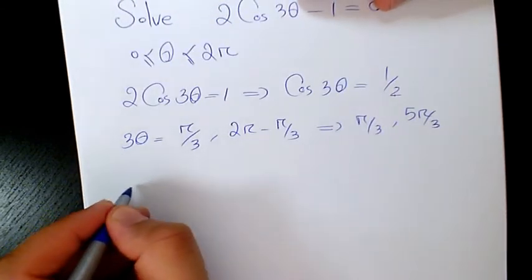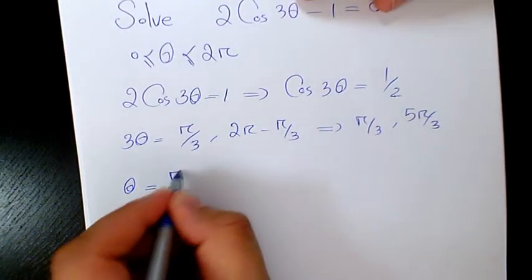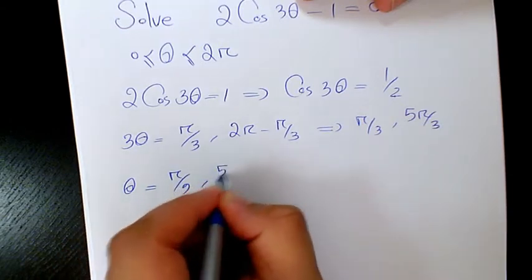when you divide by 3 it's going to be theta equals π over 9, 5π over 9.